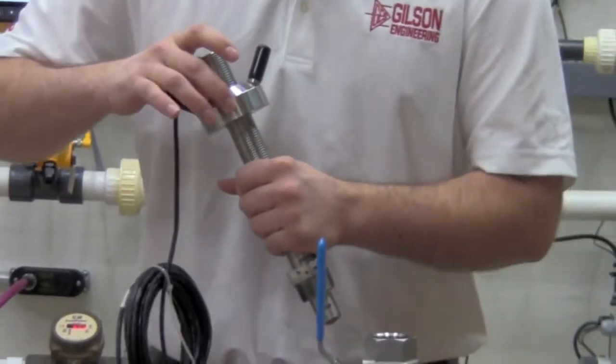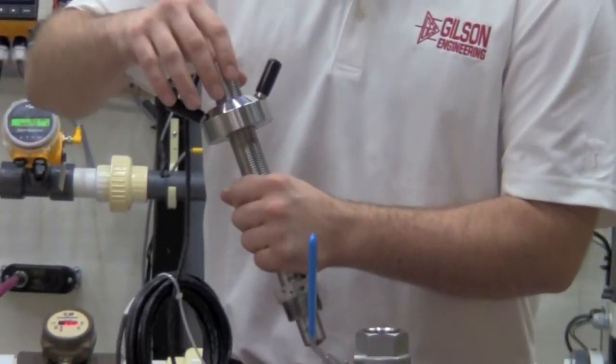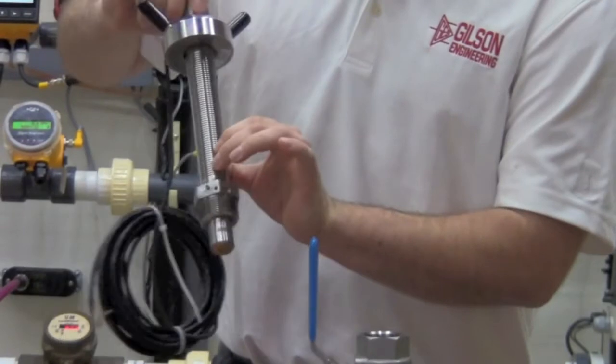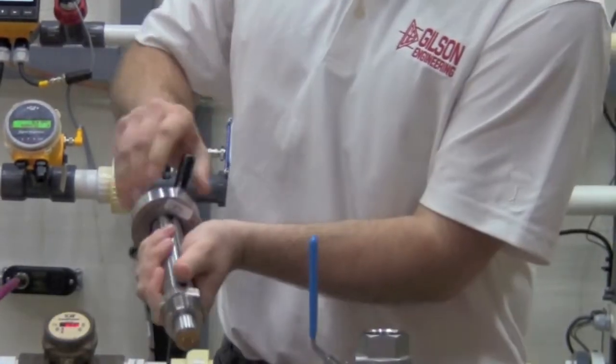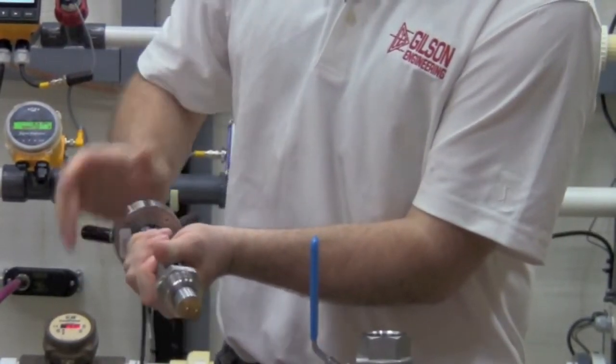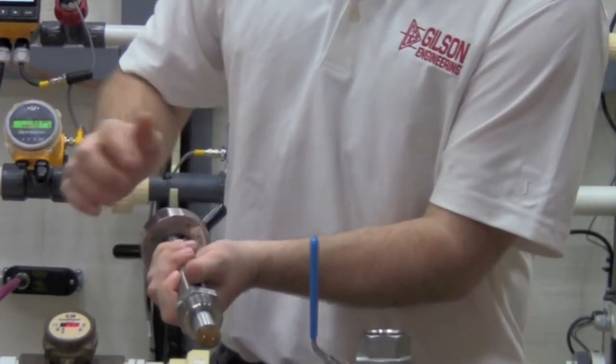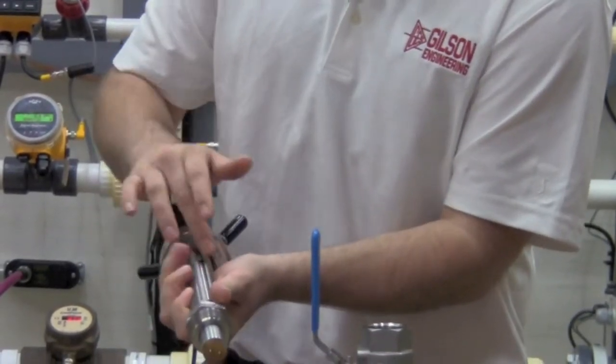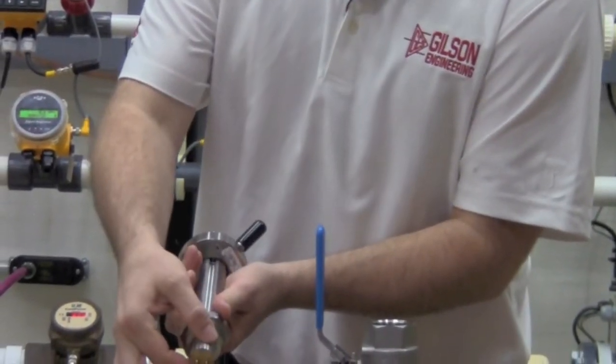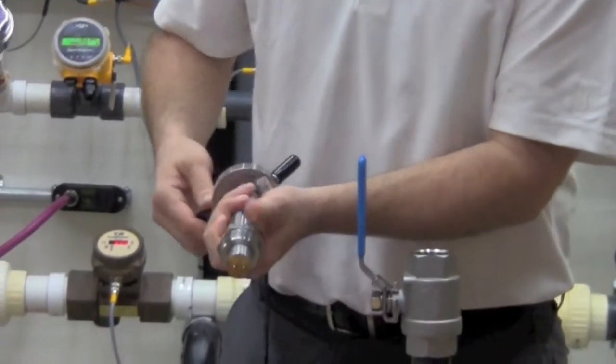This large chunk of stainless steel at the top is used to adjust the insertion depth. And you can see this will spin independent of the outer body. It allows the inside portion to continue inserting.